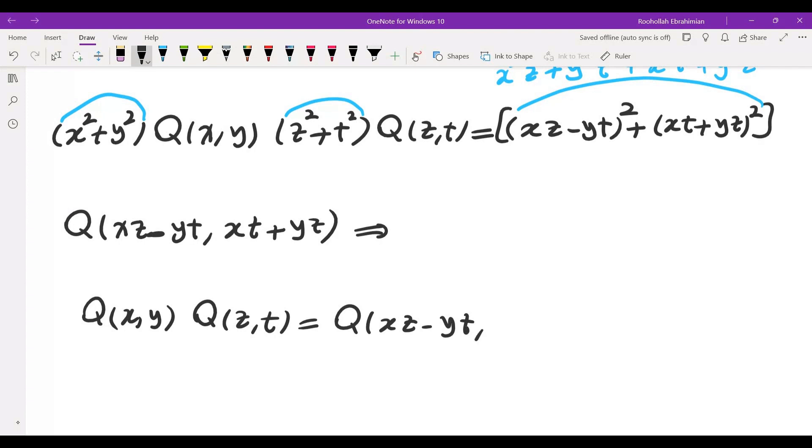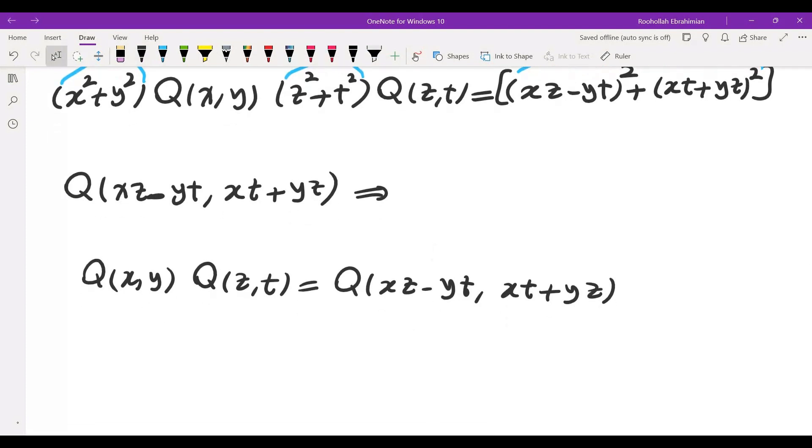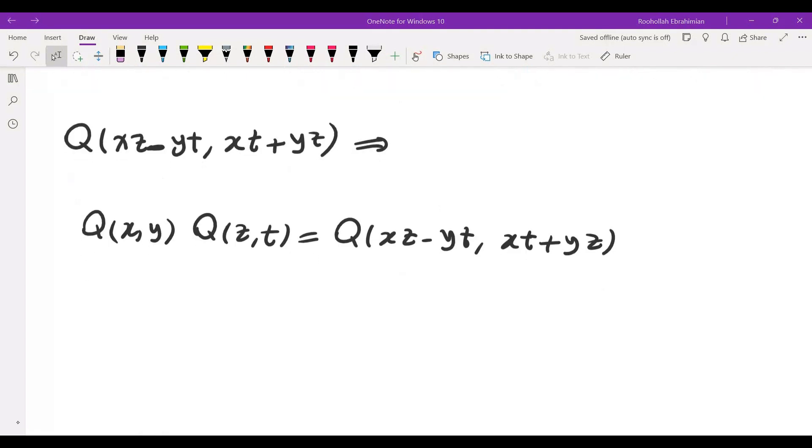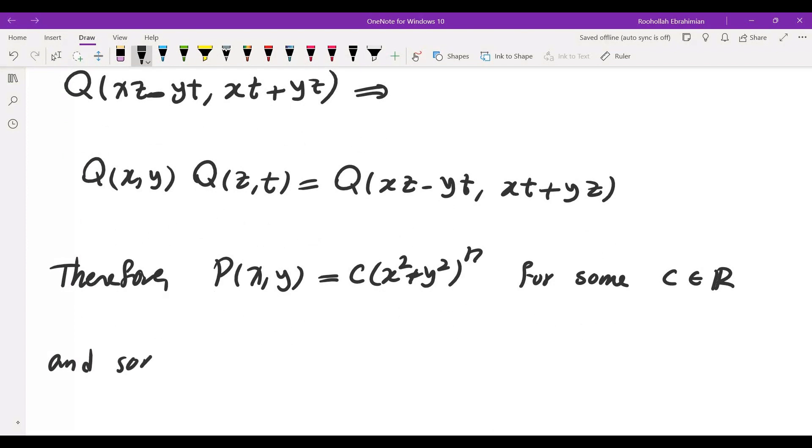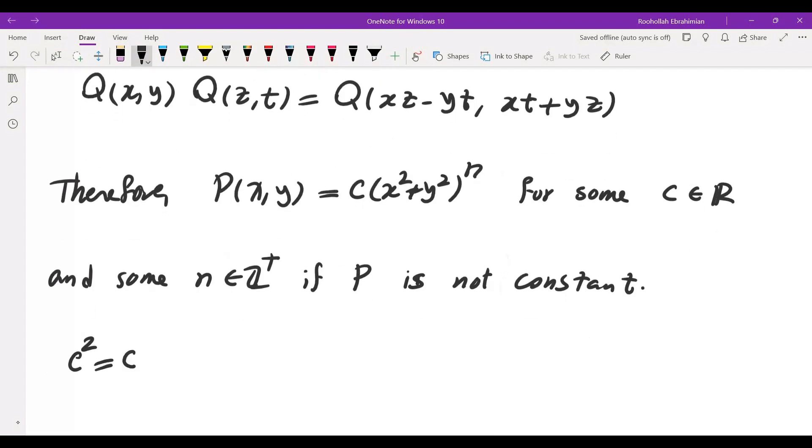So what does that mean? It means we can repeat the same argument or you can argue by induction and factoring another X squared plus Y squared from Q so what that means is eventually after you do that you get P of X Y is equal to X squared plus Y squared to some integer power and then times a constant for some constant C and some positive integer N if P is not constant.